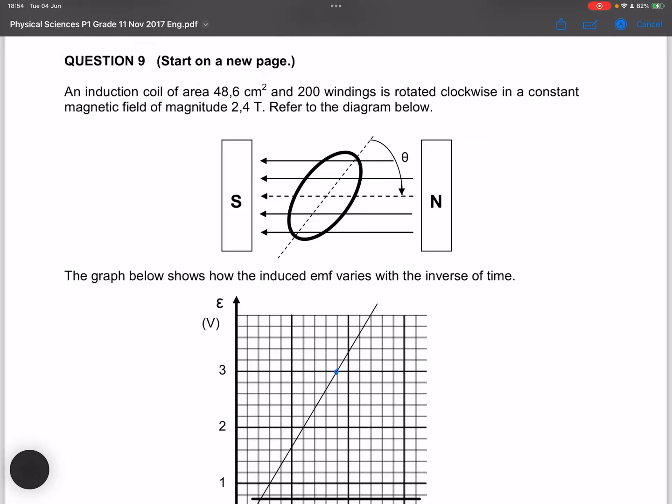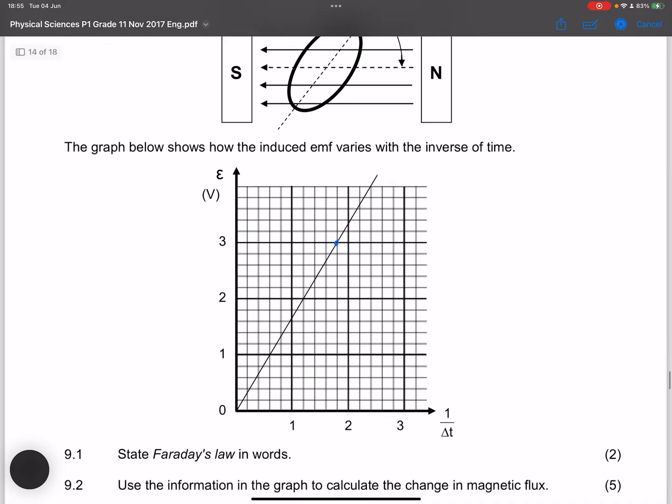As we look at question nine, they say an induction coil of area 48.6 cubic centimeters and 200 windings is rotated clockwise in a constant magnetic field of magnitude 2.4 Tesla. They say refer to the diagram below. The graph below shows how the induced EMF varies with the inverse of time.